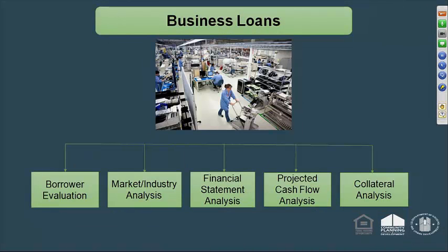For business loans, you're not just looking at an individual property for the payback — you're looking to the ongoing business operation to be able to pay back. You're still going to do the basics: the borrower evaluation, make sure you have a credit-worthy borrower, look at credit reports, and evaluate whether the team operating this business is capable of carrying out the improvement they want to finance with the Section 108 loan.